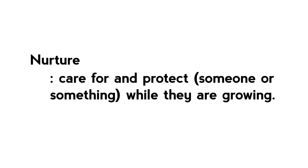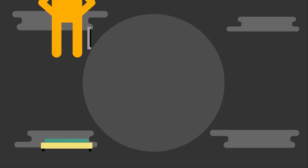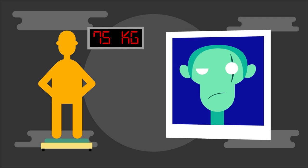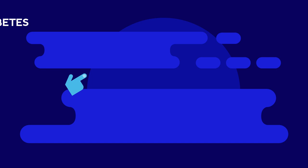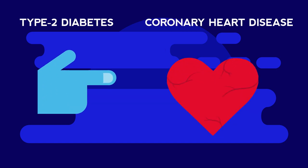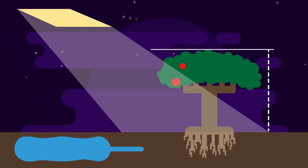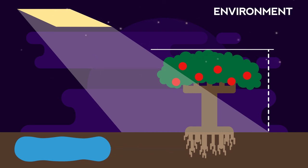Nurture refers to the effect of the environment on characteristics. The word literally means care. Examples of characteristics that are determined by the environment are weight or mass, which is dependent on your diet, or the presence of a scar. Some diseases may be caused by environmental influences, such as type 2 diabetes or coronary heart disease. Imagine a plant has not received enough sunlight or water — this may influence the height of the plant or the number of fruits produced.